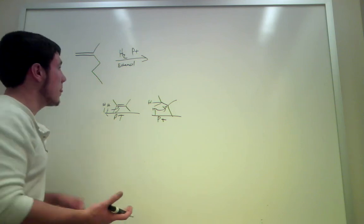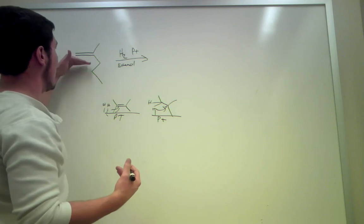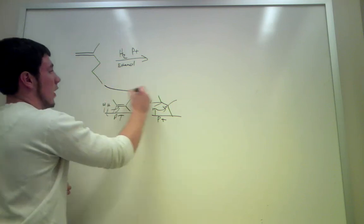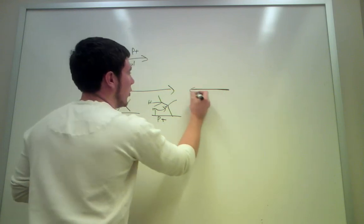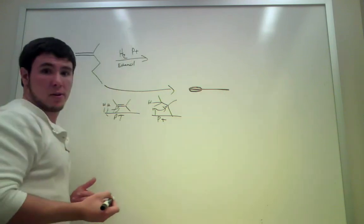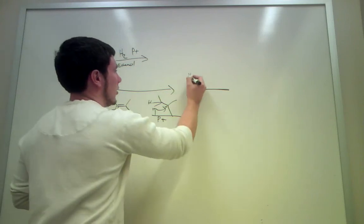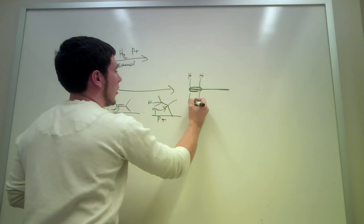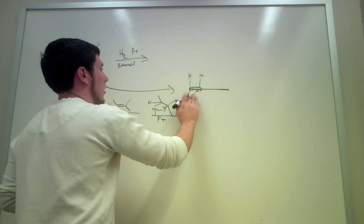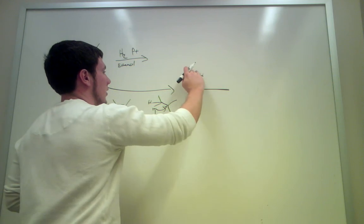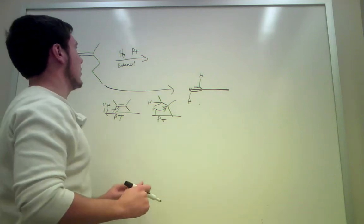Just know that it's a syn addition, which means that they both come on the same side. So you can imagine, if you will allow me to take this and just imagine this as a flat plane with the double bond right here. So the two hydrogens are either going to form right here or right here. You will never see this. That does not occur.